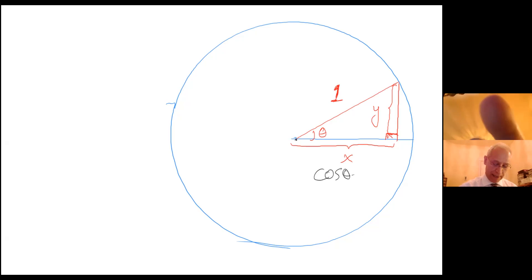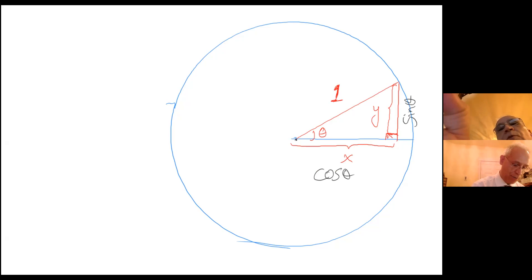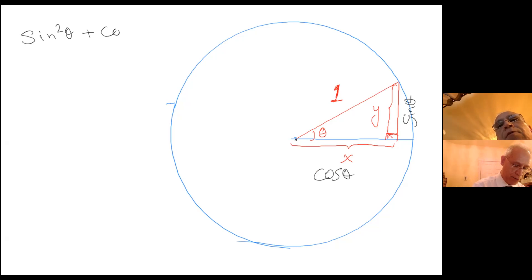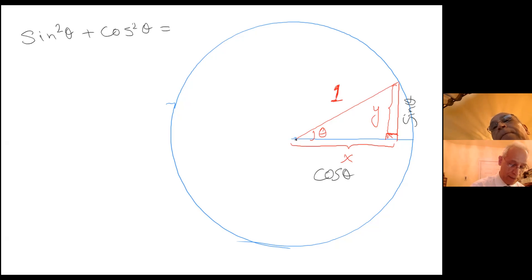And the vertical distance is sine theta. From this picture you can clearly see that sine squared of theta plus cosine squared of theta equals the square of the hypotenuse, which is one squared — so it equals one.